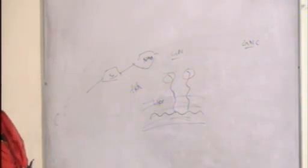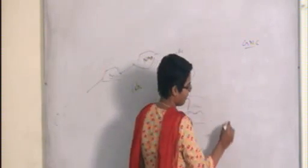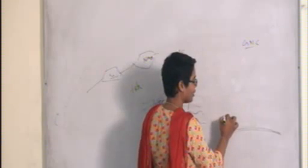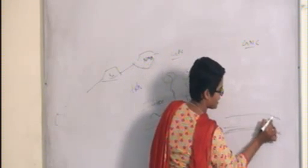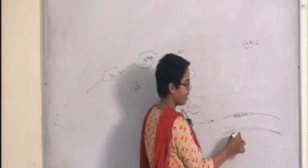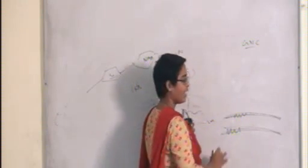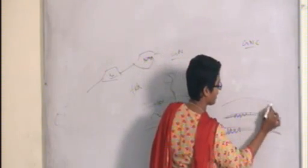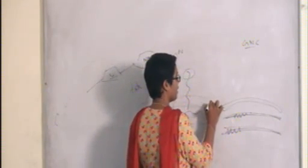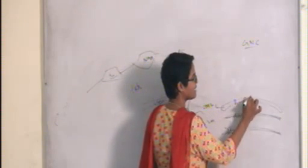Gram negative cell wall is a bit more complex. After the cell membrane, you have thin sheets — around two nanometer sheets — of peptidoglycan layer. After this peptidoglycan layer, there is a special layer known as the outer membrane layer. In the outer membrane layer, you will have various proteins.